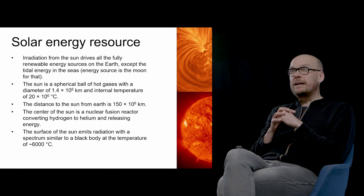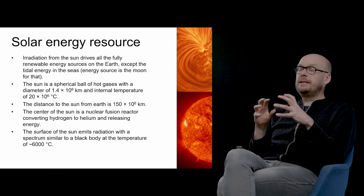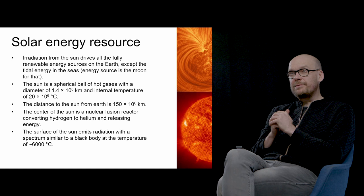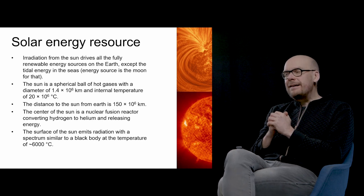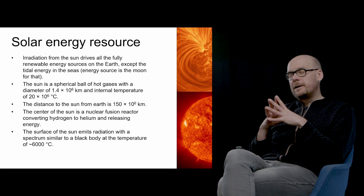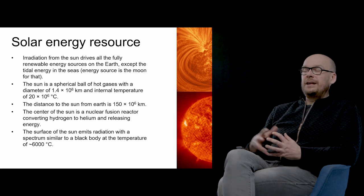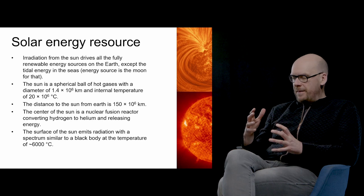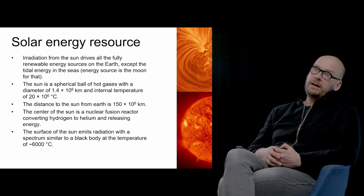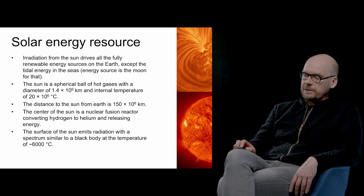The sun is a spherical ball of hot gases with a diameter of 1.4 million kilometers and an internal temperature of 20 million degrees Celsius. The distance to the sun from earth is roughly 150 million kilometers. The center of the sun is a nuclear fusion reactor converting hydrogen to helium and releasing a lot of energy. The surface of the sun emits thermal radiation with a spectrum similar to a black body at the temperature of 6,000 degrees Celsius.